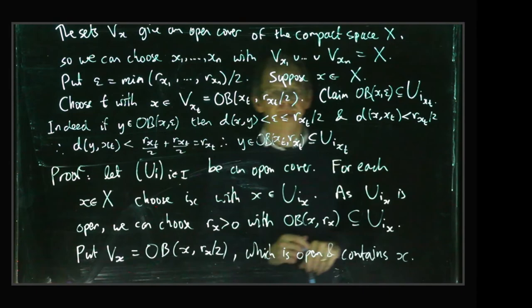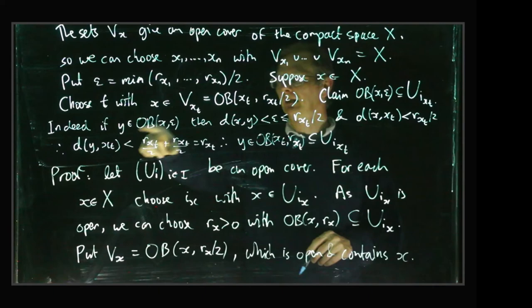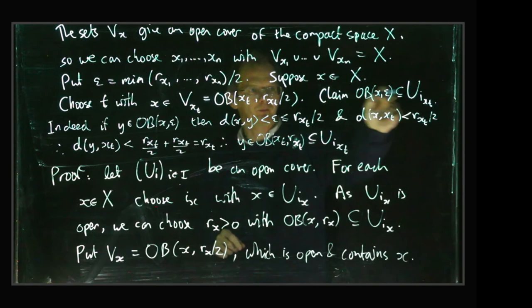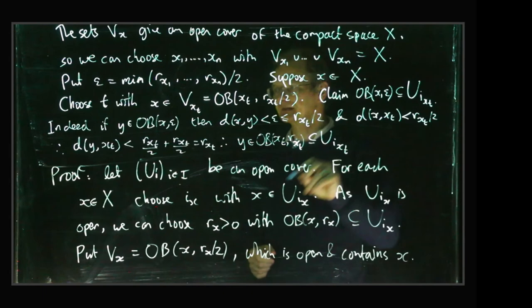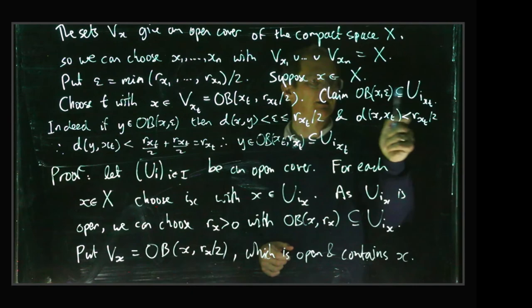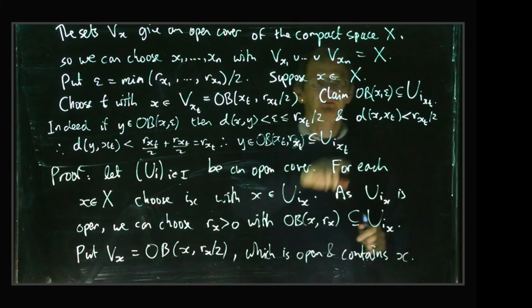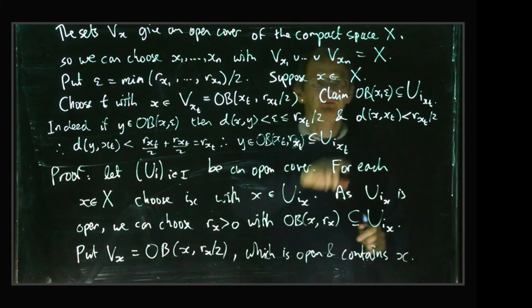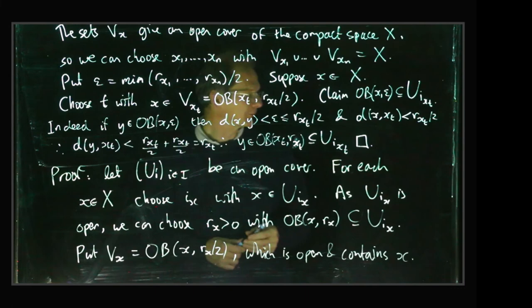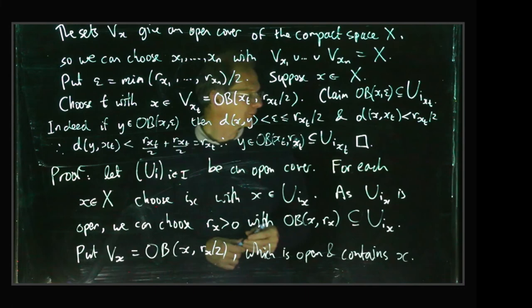Okay, so we've shown that if y lies in OB(x, epsilon) then y also lies in Ui_xt, and that's precisely what we mean by saying we've got this inclusion of sets here. So we've shown that this open ball is contained within one of the sets of the original cover, and that works for any x with this particular epsilon. This epsilon is fixed, it doesn't depend on x. So for any x, this ball of this radius is contained in one of the sets of the open cover, and that's precisely what it means to say that epsilon is a Lebesgue number. So that proves that every open cover of a compact metric space has a Lebesgue number, and that will turn out to be quite useful later on when we're studying some detailed properties of homology groups.